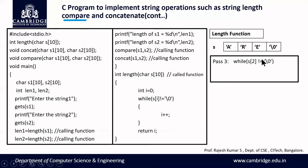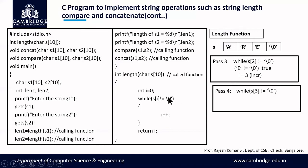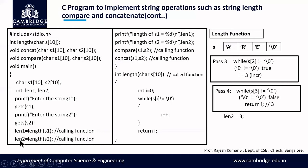Third pass: s[2]='e', not equal to null, increment i → i=3. Fourth pass: s[3]=null, null != null is false, we exit the while loop and return i=3. This 3 is assigned to len2. We then print: length of s1 is 2, length of s2 is 3.